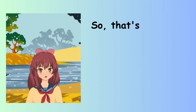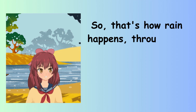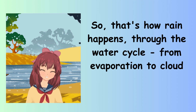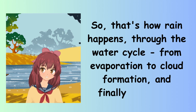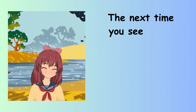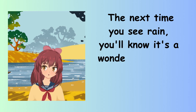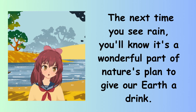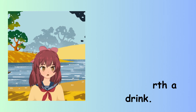So that's how rain happens, through the water cycle. From evaporation to cloud formation and finally rainfall. The next time you see rain, you'll know it's a wonderful part of nature's plan to give our earth a drink.